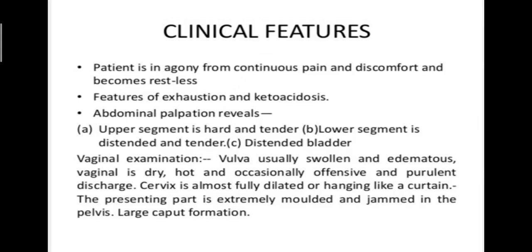Clinical features in a case of obstructed labour: the patient is in agony from continuous pain and discomfort and becomes restless, with features of exhaustion and ketoacidosis. On abdominal palpation, the upper segment is hard and tender, and the lower segment is distended and tender. There is a distended bladder. On vaginal examination, the vulva is usually swollen and oedematous, the vagina is dry, hot, and occasionally has offensive discharge, the cervix is fully or almost fully dilated, and the presenting part is extremely moulded with a large caput formation.